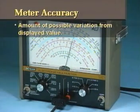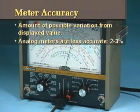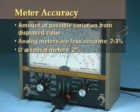As we mentioned earlier, analog meters are generally not nearly as accurate as digital meters. Normally, analog meters have accuracy ratings of 2 to 3 percent. For d'Arsonval movements, 2 percent accuracy is typical.